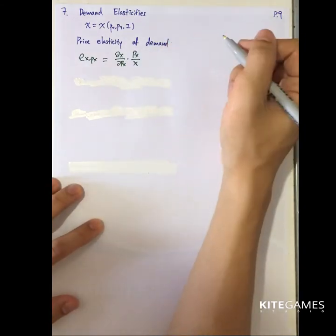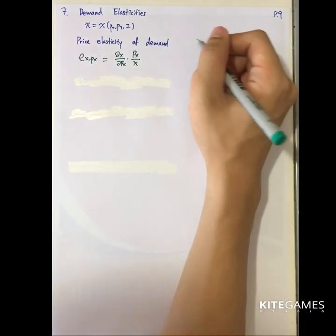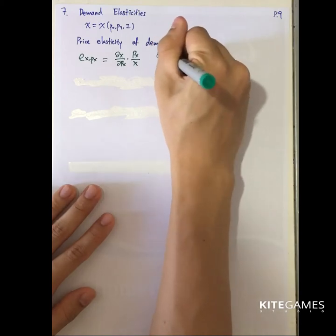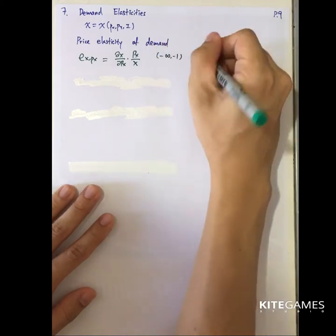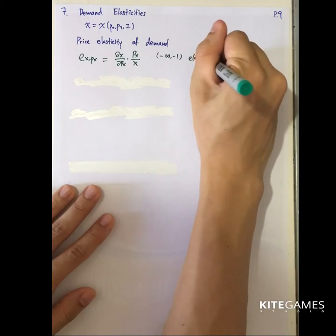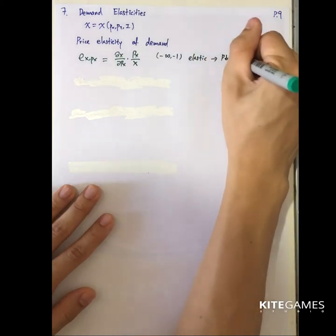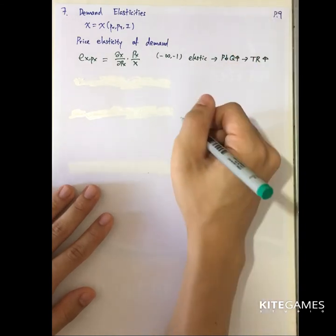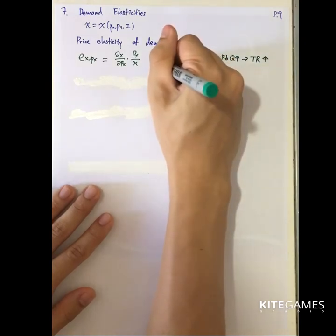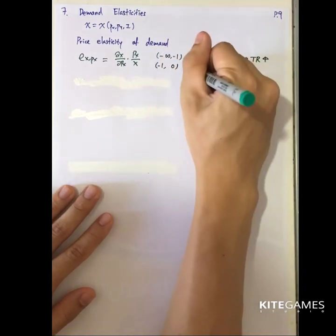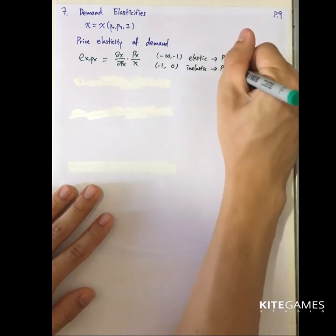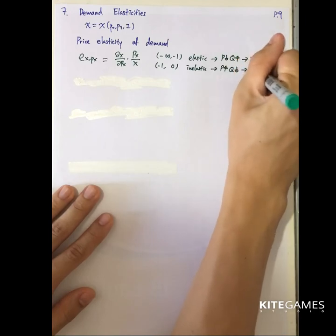So in your high school or elementary micro lectures, you know that if the price elasticity lies between negative infinity and negative one, we call this elastic. That means when price decreases, the output will increase, and as a result, the seller's total revenue will increase. And if it ranges from negative one to zero, this is called inelastic. Then when price increases and quantity decreases, total revenue will still increase.